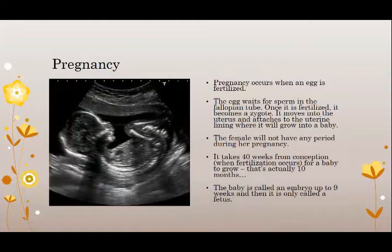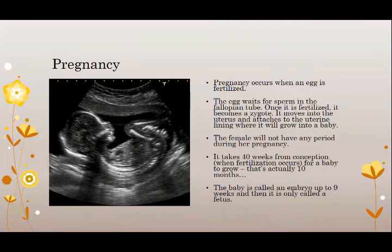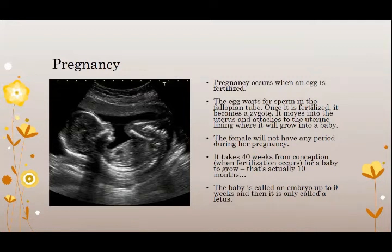Pregnancy occurs when an egg is fertilized. The egg will wait for possible fertilization by sperm in the fallopian tubes. Once the egg is fertilized, it becomes known as a zygote. It will move down into the uterus and attach to that uterine lining made up of muscle and tissue, where it will develop into a baby. The female will not have any menstrual period during pregnancy. It takes 40 weeks from conception — when fertilization occurs — for a baby to grow and develop. That is actually 10 months, even though we know pregnancy to be nine months. The baby will be called an embryo up until nine weeks and then from there it is called a fetus.